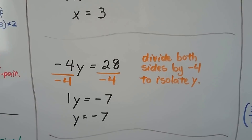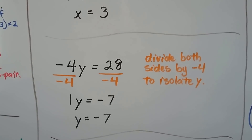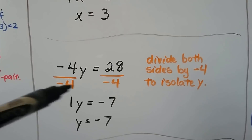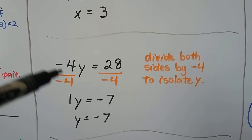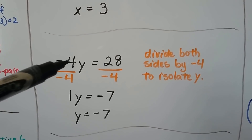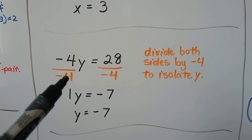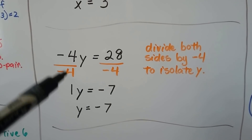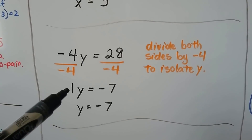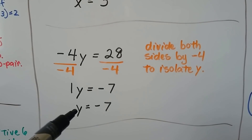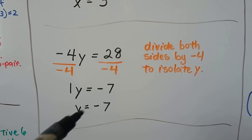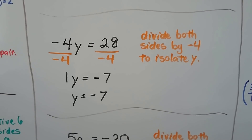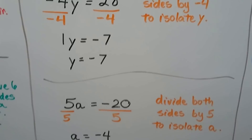Here we've got negative 4y equals 28. That's still a multiplication problem, so we divide both sides by the negative 4 — the negative sign goes with the coefficient. Negative 4 divided by negative 4 is a positive 1, so we just have y. 28 divided by negative 4 is negative 7. We've isolated y to equal negative 7.